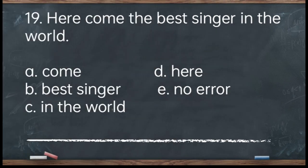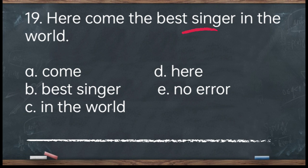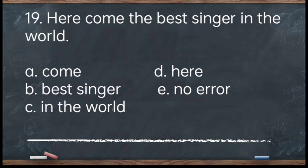Number 19. Here come the best singer in the world. A. Come. B. Best singer. C. In the world. D. Here. E. No error. The answer is letter A — 'come.' Just like 'there' as an expletive, the verb should agree with the noun following it. The best singer is only one, so the verb must be singular — it should have an S. Corrected: Here comes the best singer in the world.